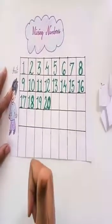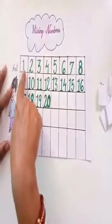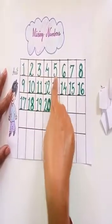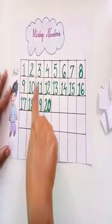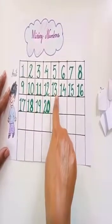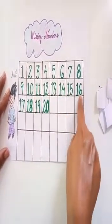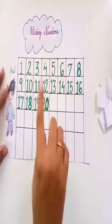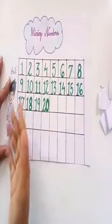Now we will read the numbers again: 1, 2, 3, 4, 5, 6, 7, 8, 9, 10, 11, 12, 13, 14, 15, 16, 17, 18, 19 and 20. Wow, we have found out all the missing numbers! Thank you.